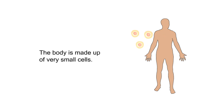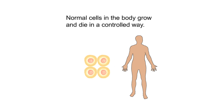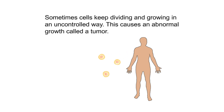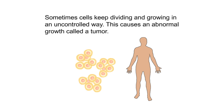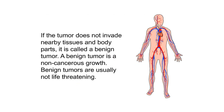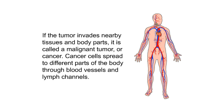The body is made up of very small cells. Normal cells in the body grow and die in a controlled way. Sometimes cells keep dividing and growing in an uncontrolled way — this causes an abnormal growth called a tumor. If the tumor does not invade nearby tissues and body parts, it is called a benign tumor, which is a non-cancerous growth. Benign tumors are usually not life-threatening. If the tumor invades nearby tissues and body parts, it is called a malignant tumor, or cancer.